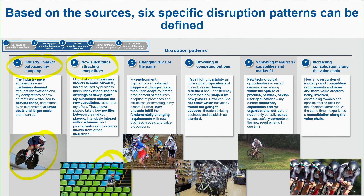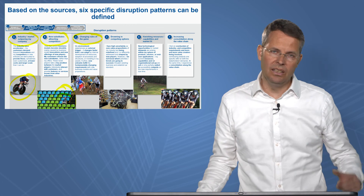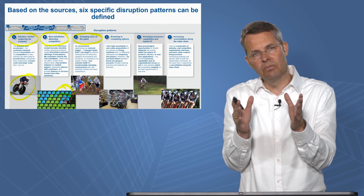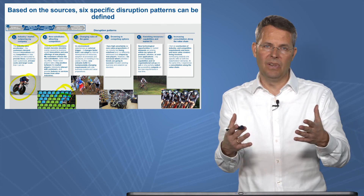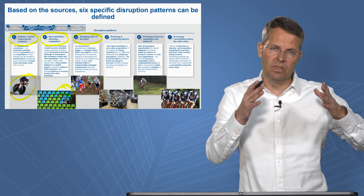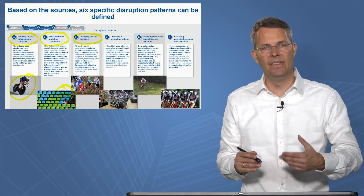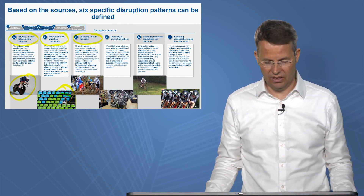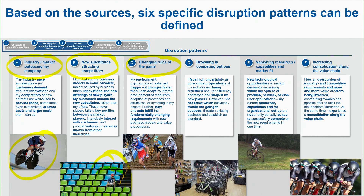The third pattern is changing rules of the game. For example, the insurance industry and public transportation have been affected by deregulation. In Germany, deregulation introduced buses going from A to B — something already familiar in other countries. Changing the rules of the game means people aren't only riding bicycles anymore; they can also run.